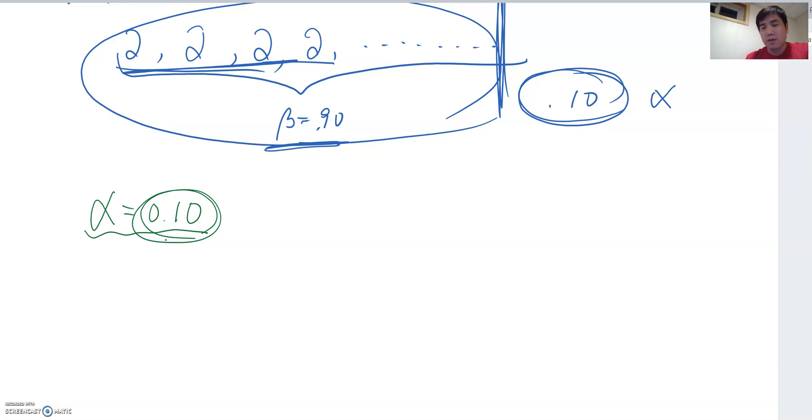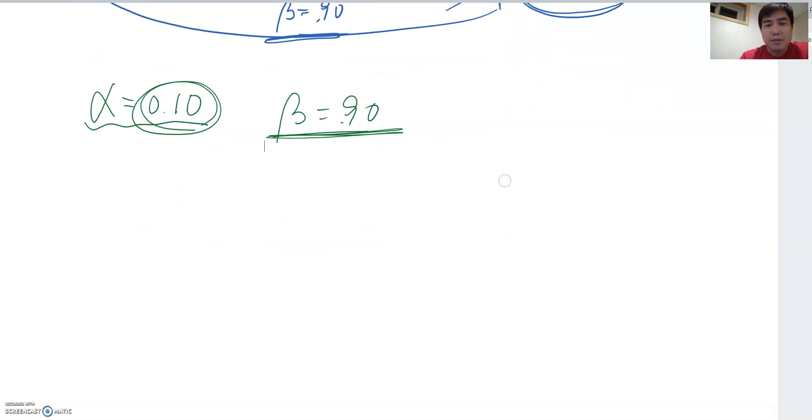Can you guess alpha equal to 0.05? What does that mean? Yes, we allow the area of the unusual case as five percent. Then the usual data set will be 0.95. That's exactly what this means.